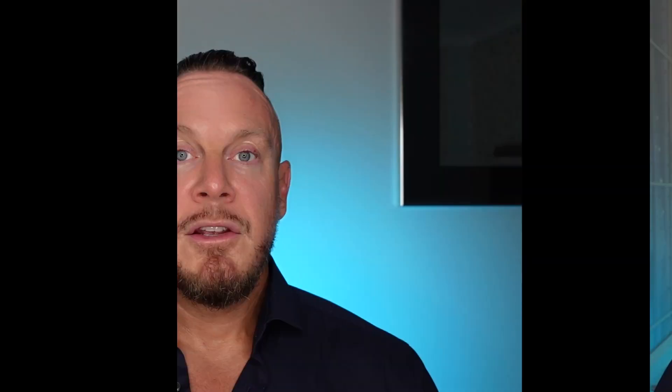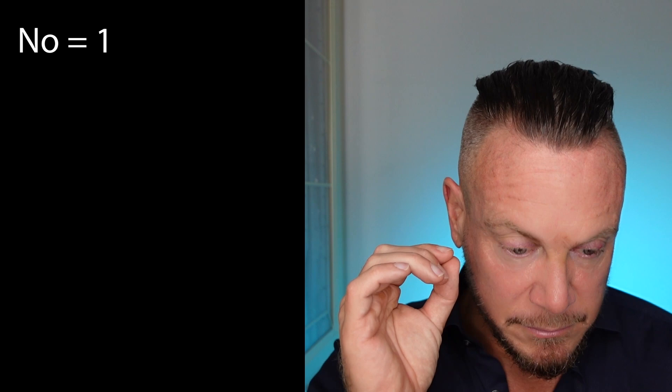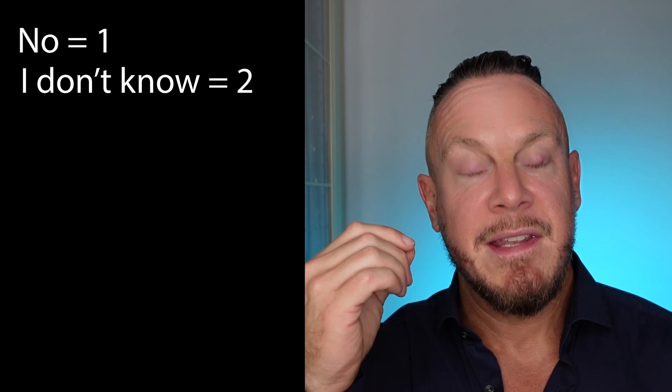There are problems with the definition in the DSM and with the testing process — if we want to debate that, let's do it in a different video. This is just to give people a little more precision and validity when they want to know: is what I'm dealing with narcissistic personality disorder? The rating scale is: answer no — one point; I don't know or not really — two points; yes, definitely — three points per trait.